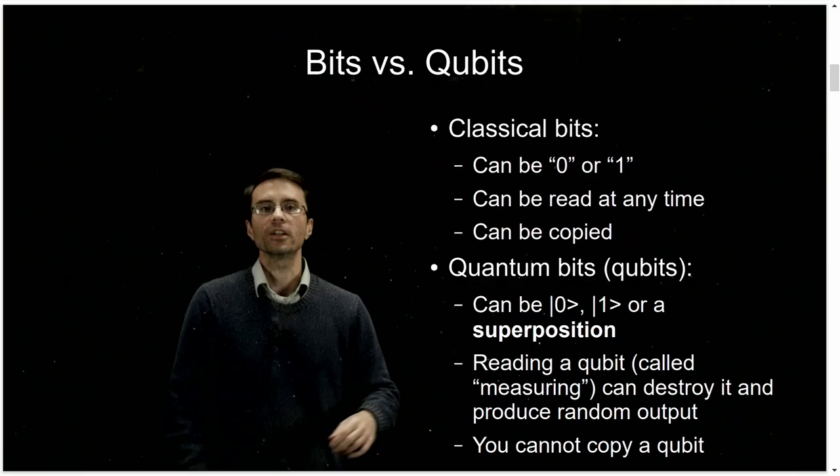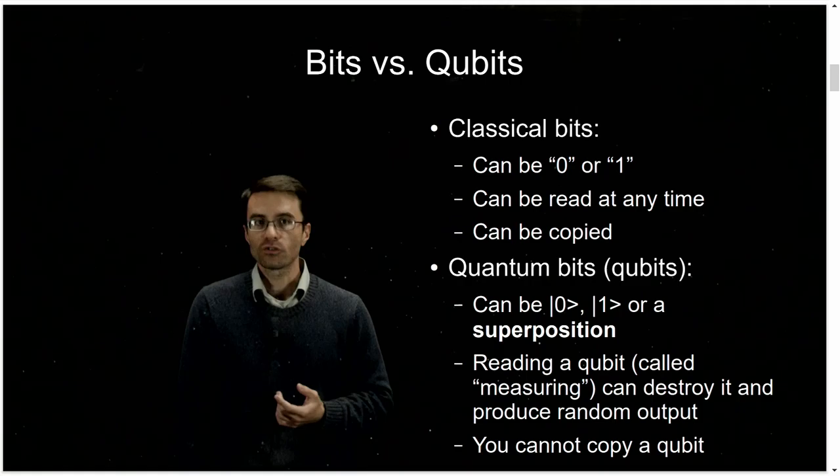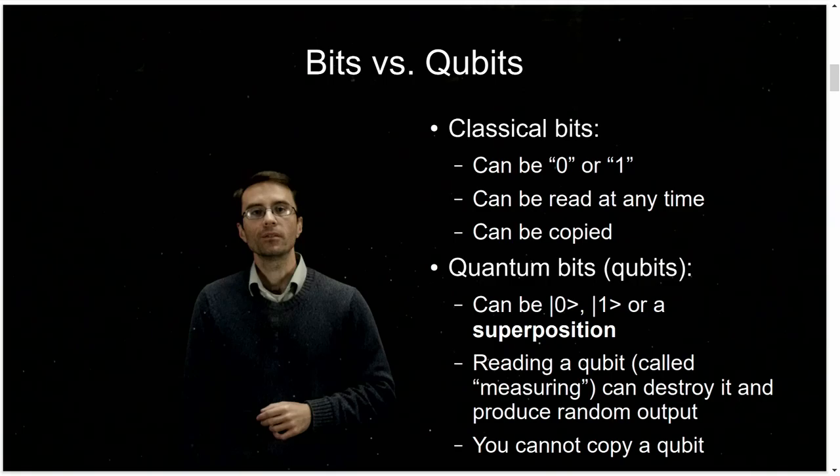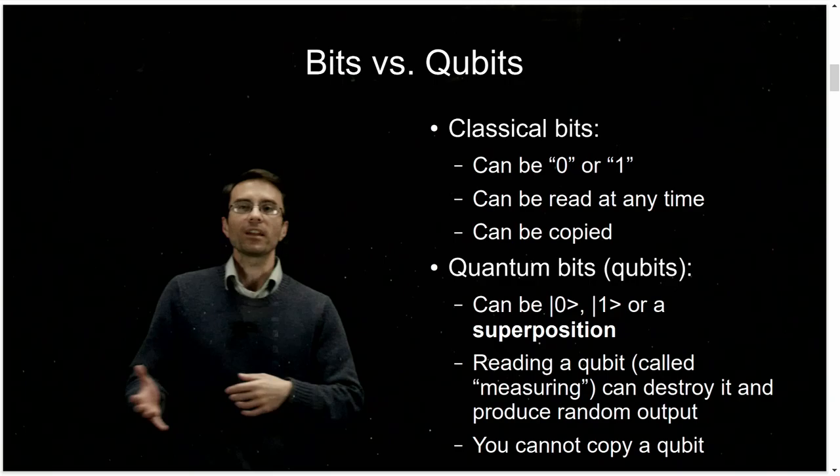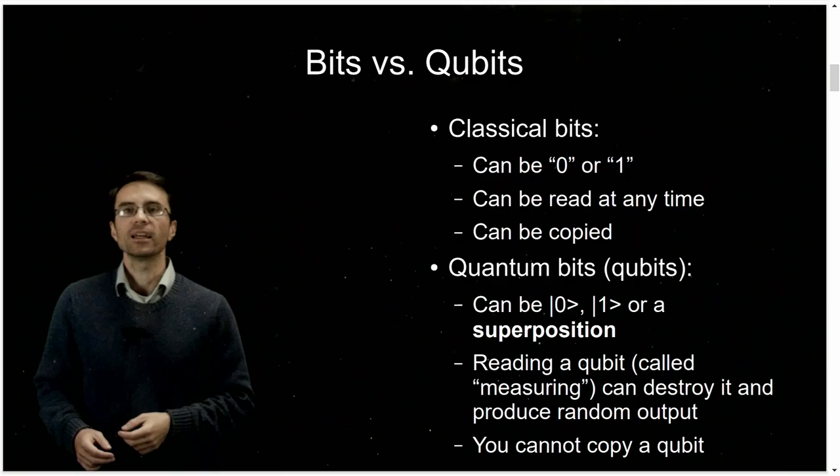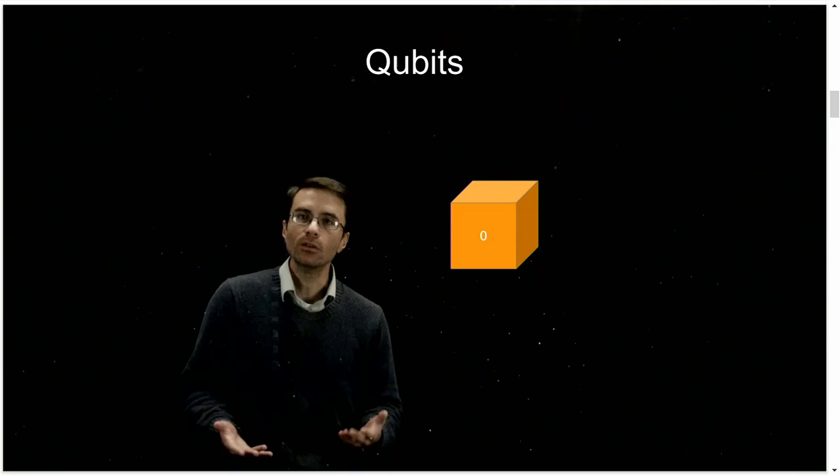There are different ways to prepare quantum information. Reading a qubit — which is called measuring it — potentially destroys it and produces random outputs. So unless you look at it at just the right angle, you're going to destroy information and not get the right result. And finally, you can't copy qubits. So if I send someone quantum bits, an attacker in the middle can't make copies of that data to attack later, which you can do very easily with classical data.